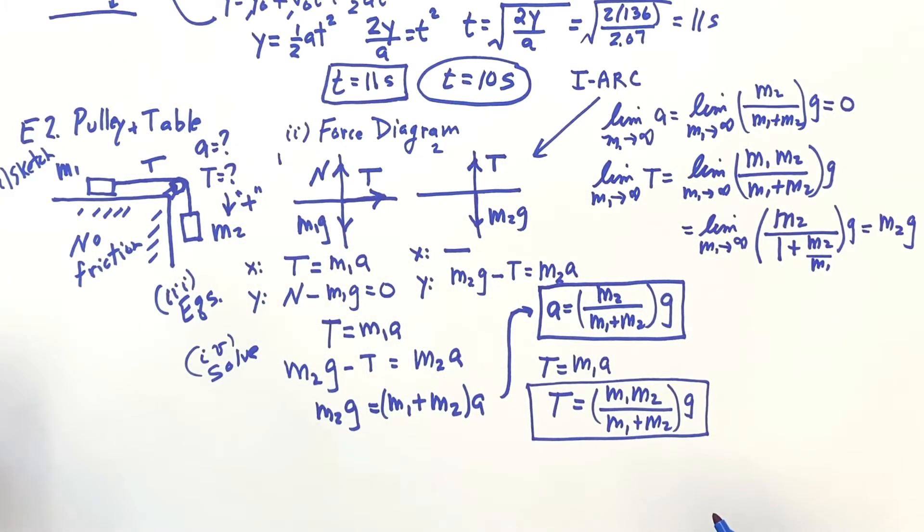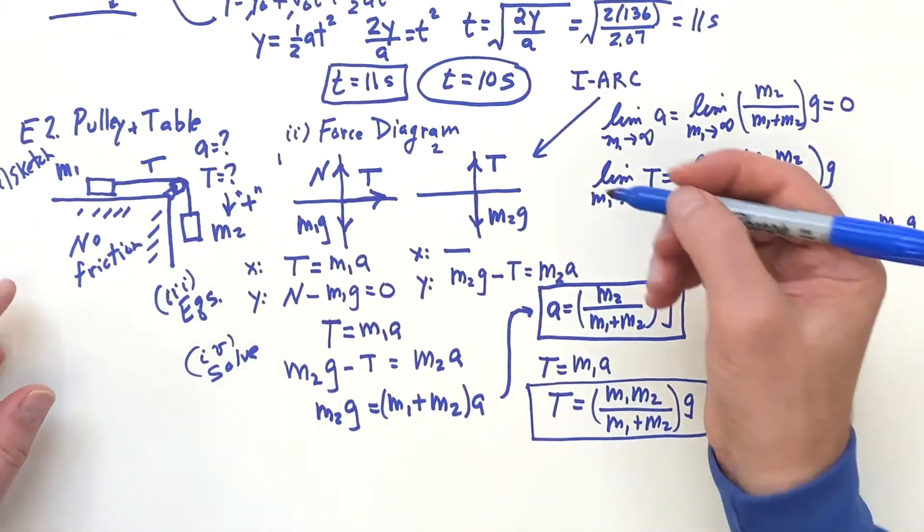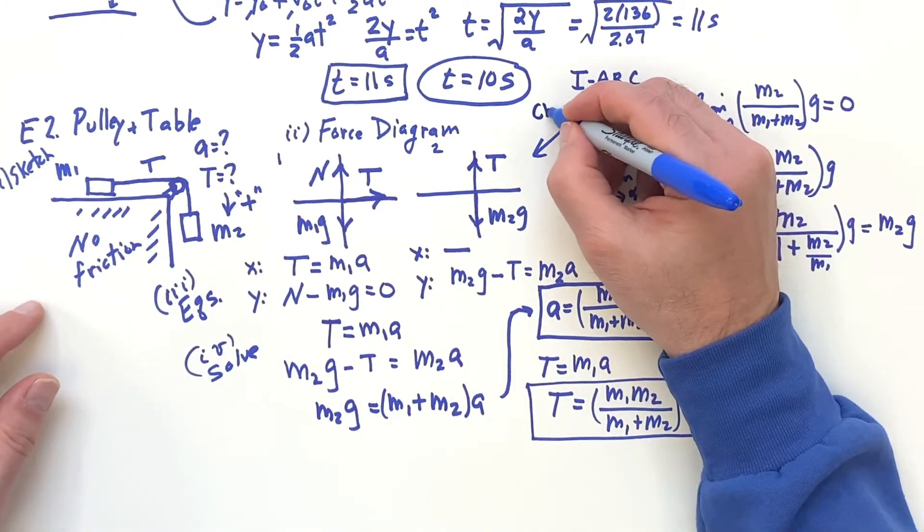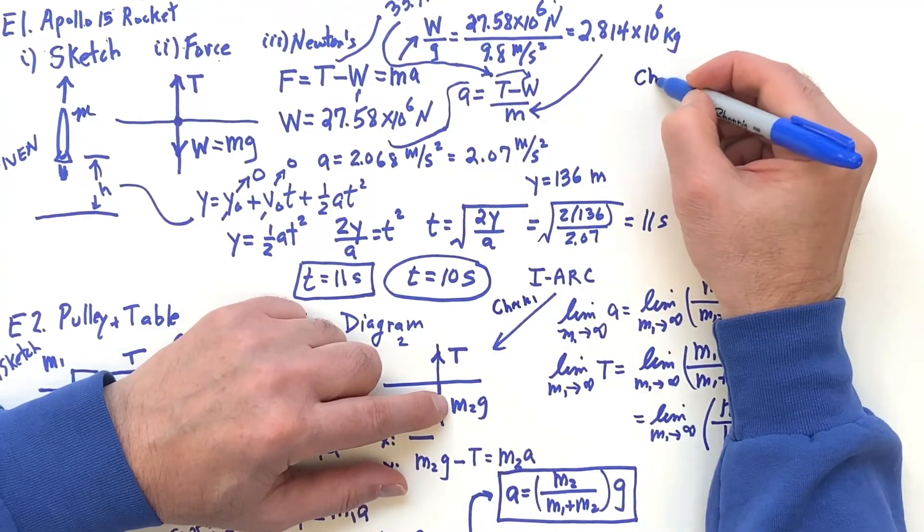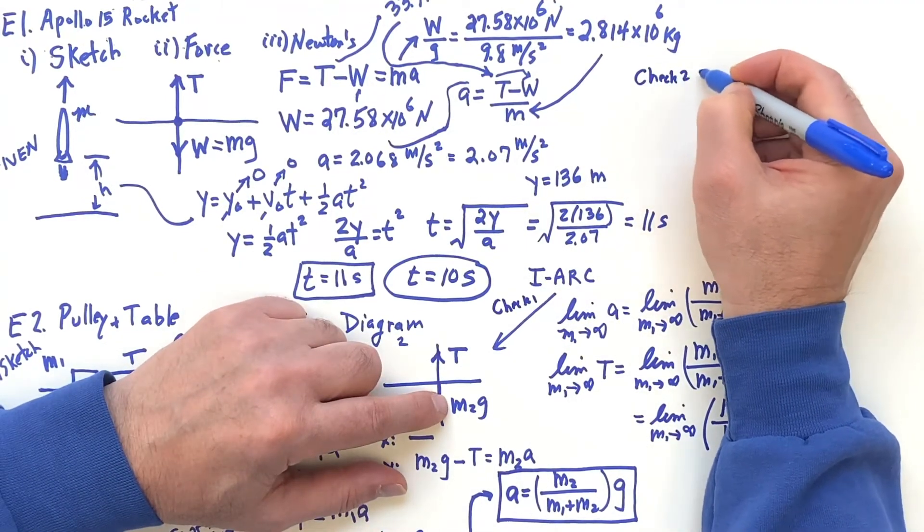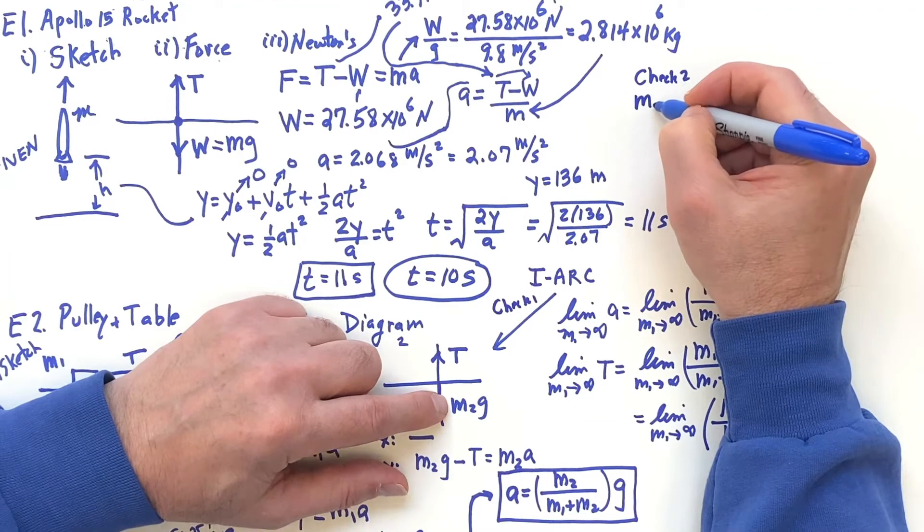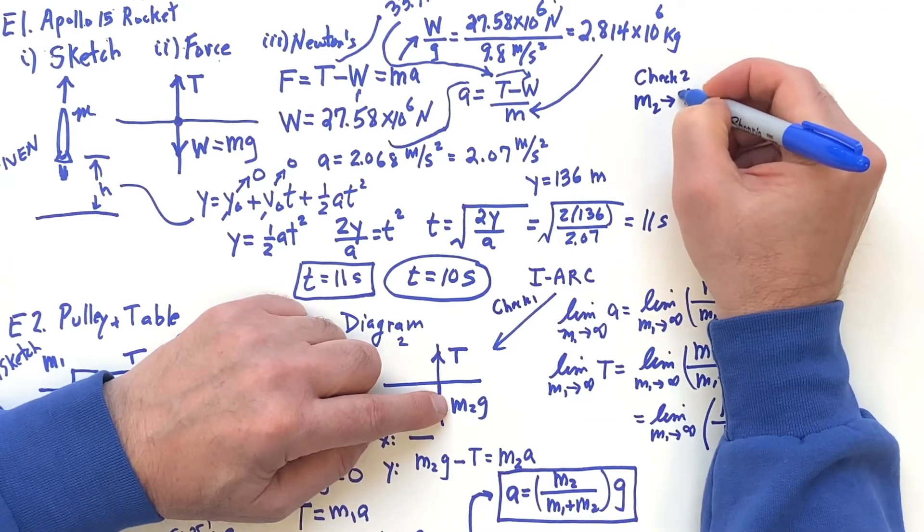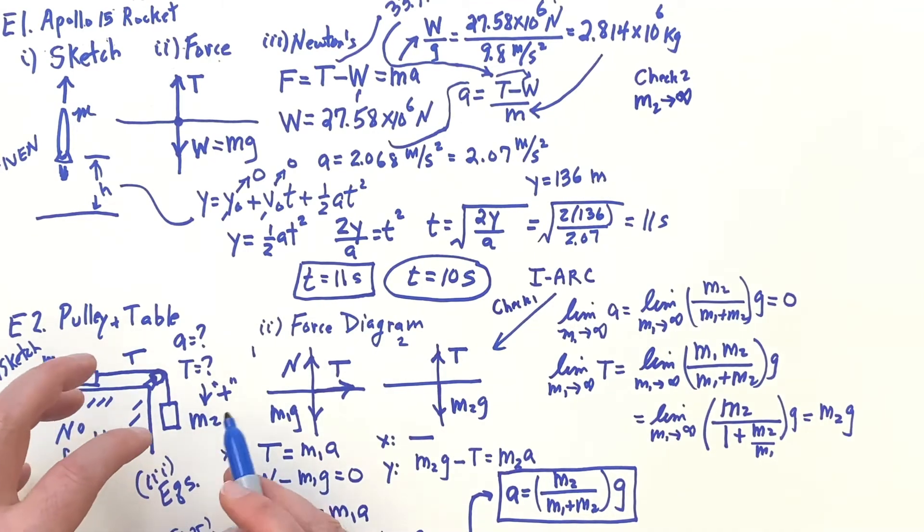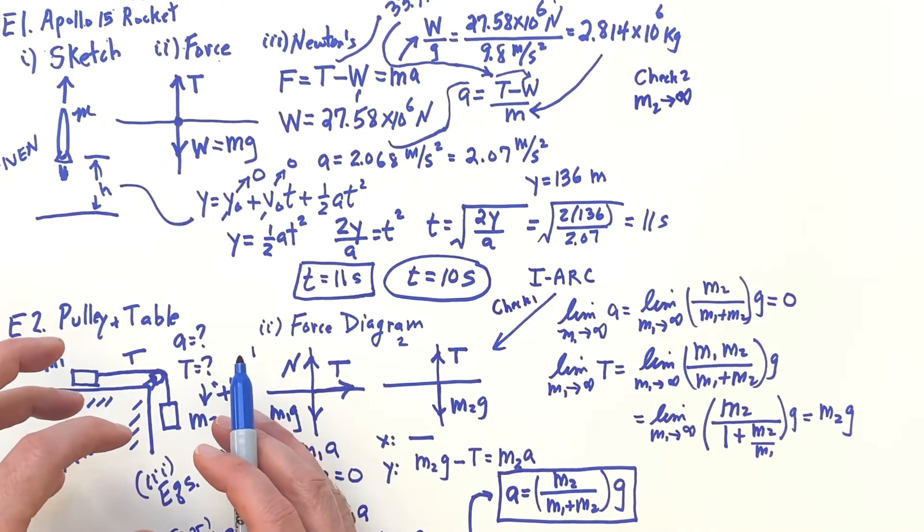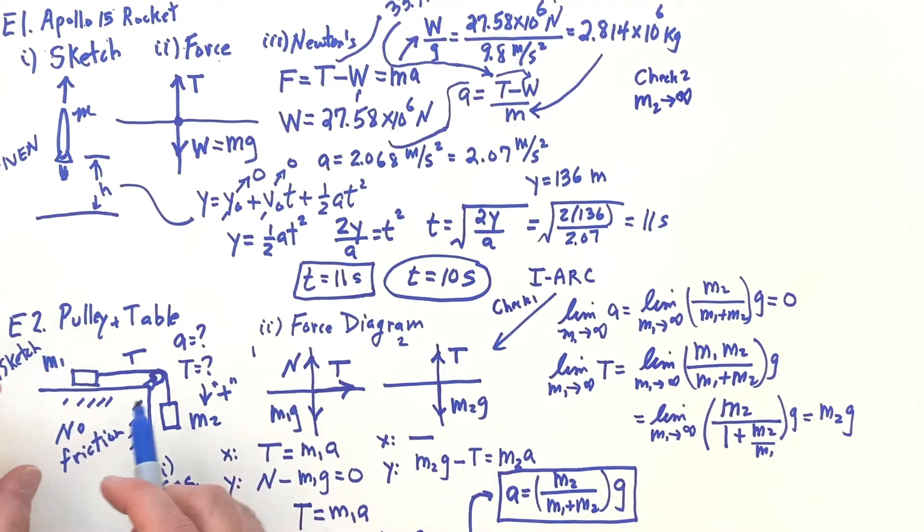Okay, how about if we do another check? Okay, so this was check one. Suppose we check two where mass two goes to infinity, super large. Well, if mass two goes super large, like say you have a big mass here, say an elephant's pulling on, say, something very, very, very light, elephant's going to fall down. That acceleration is going to be G. It's going to be G just falling down.